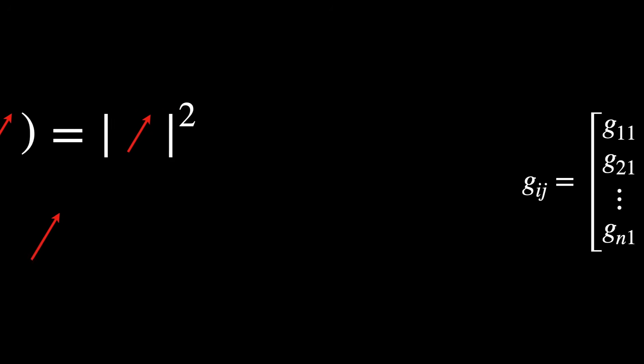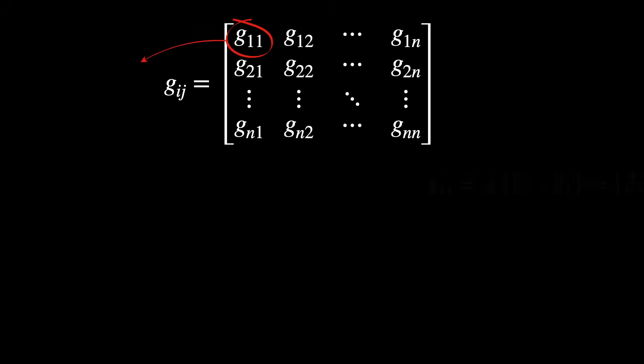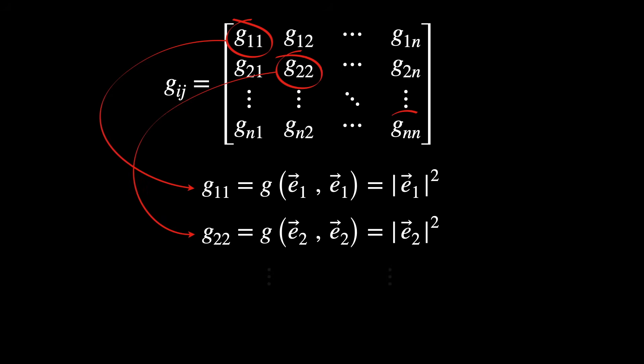This metric can be expressed as a matrix, so Gij with its indices running from 1 to n. The diagonal entries are the squared lengths of the basis vectors.